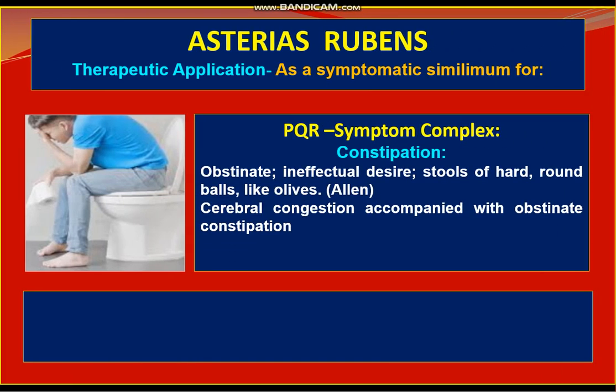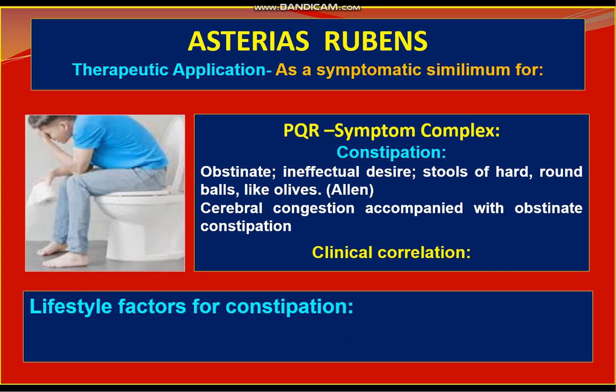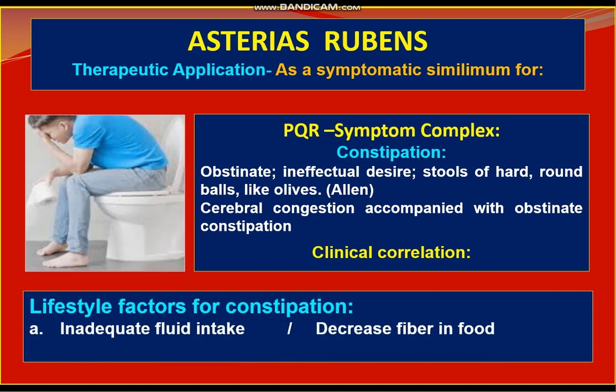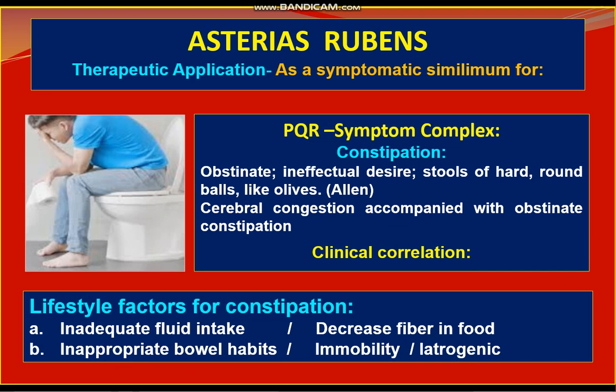The next PQRS symptom is constipation — obstinate, ineffectual desire with stools of hard round balls like olives. The concomitant is cerebral congestion accompanied with obstinate constipation in this remedy. Constipation is a lifestyle disorder that occurs especially when patients have inadequate fiber intake, inappropriate bowel habits, and are generally lethargic and immobile people who do not exercise regularly. There can also be an iatrogenic cause where intestinal motility is sluggish.